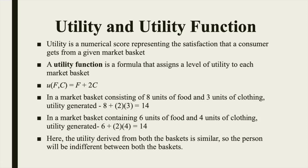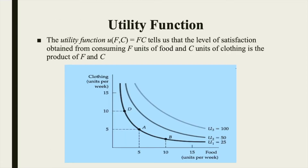We assign utility in such a way that if market basket A is preferred to basket B, then the number will be higher for A than for B. The utility function U(f,c) = f×c tells us that the level of satisfaction obtained from consuming f units of food and c units of clothing is the product of f and c.